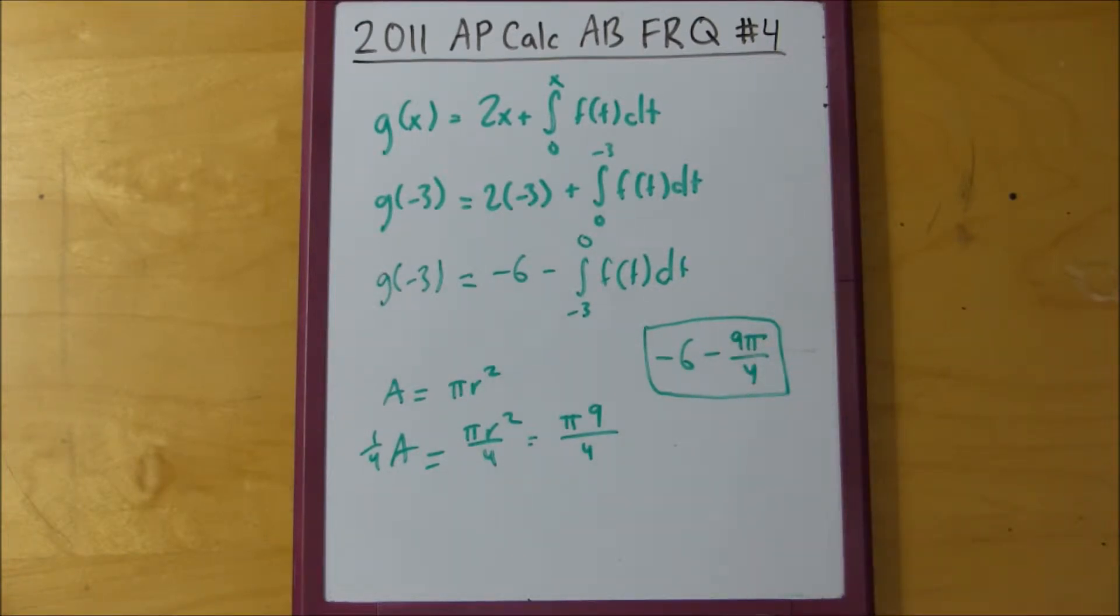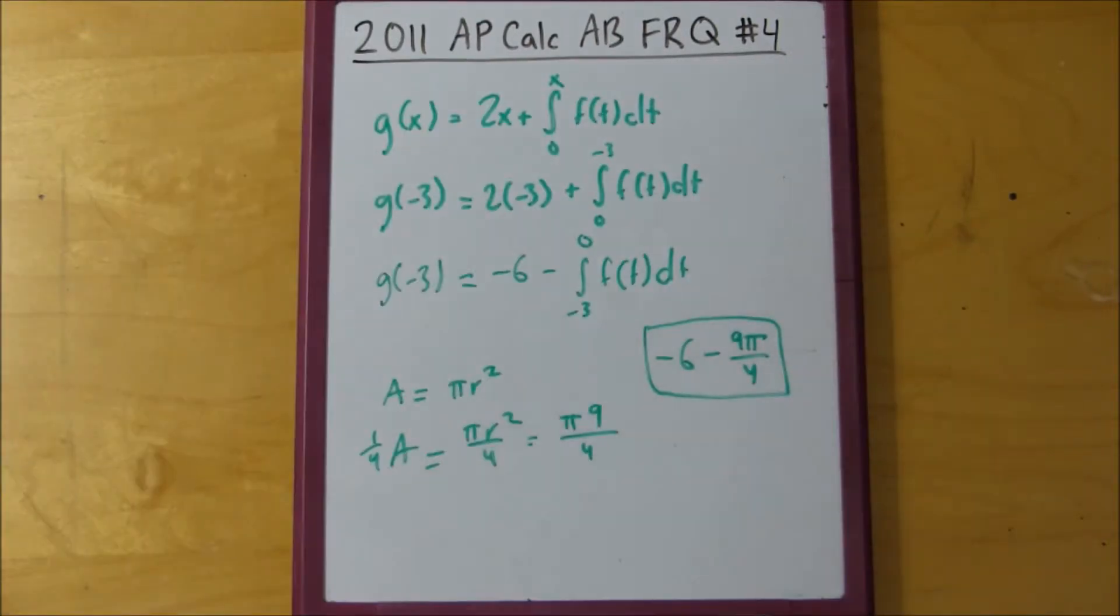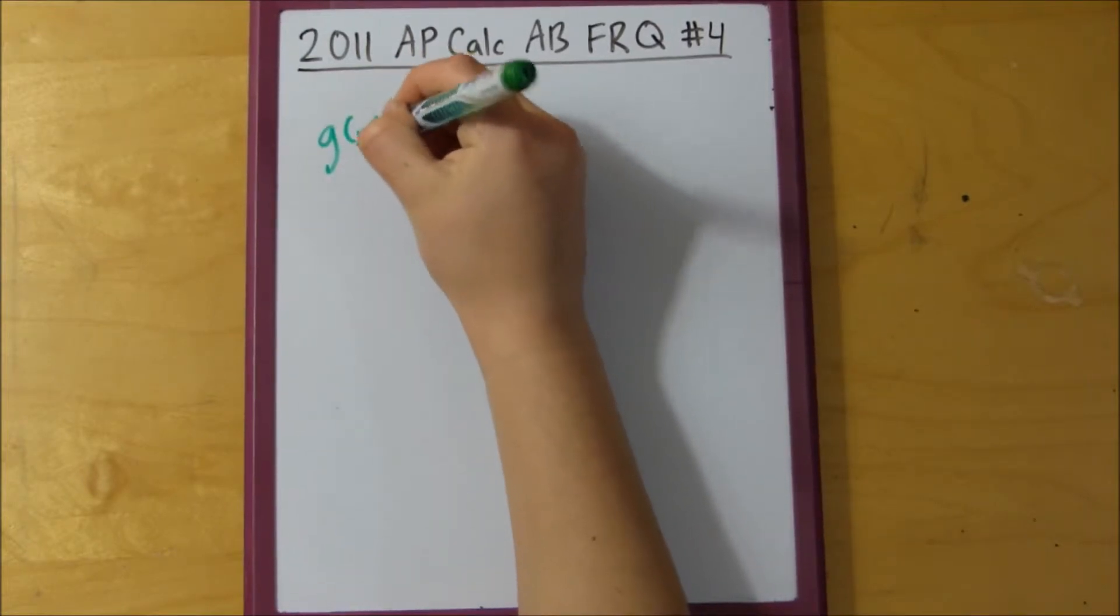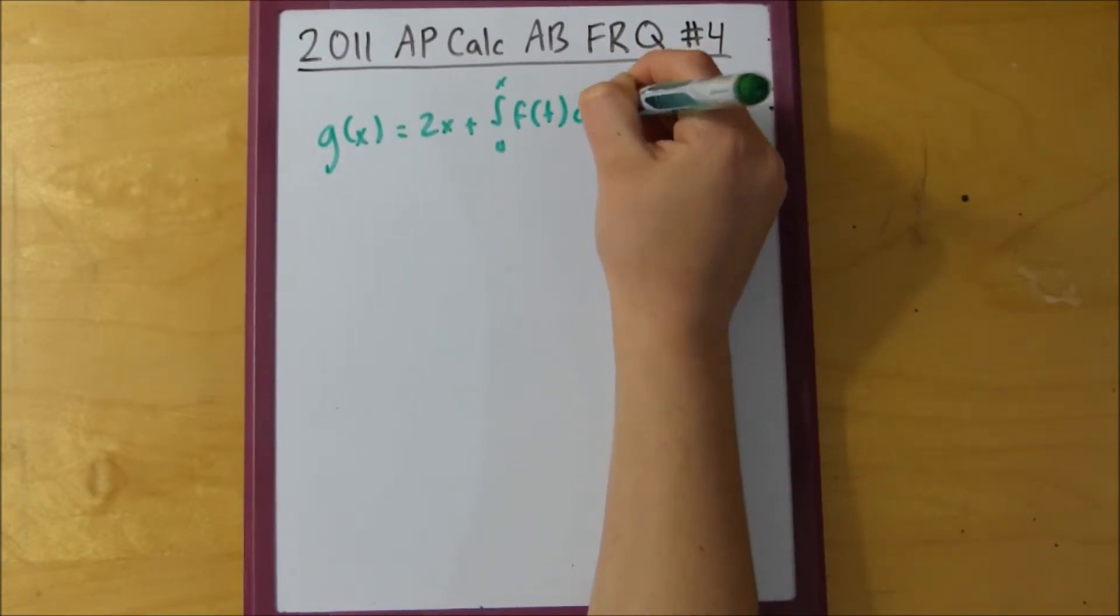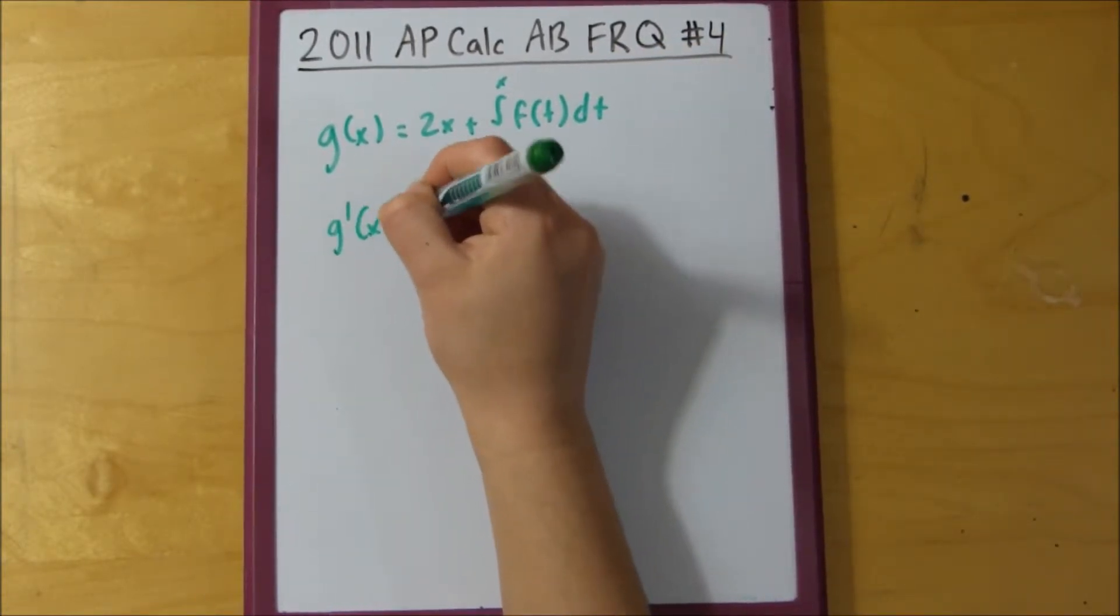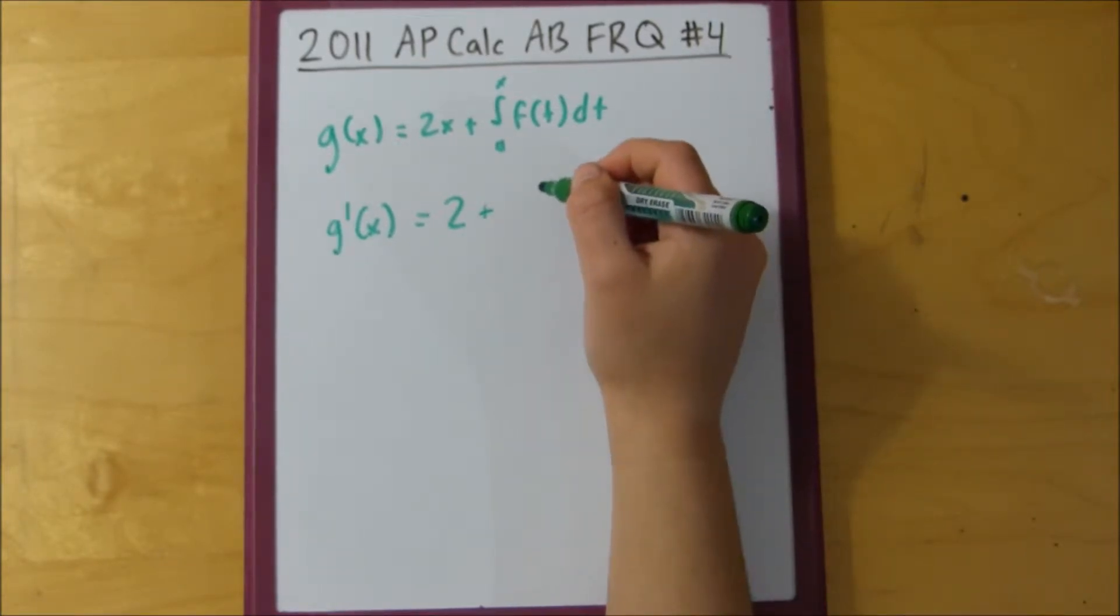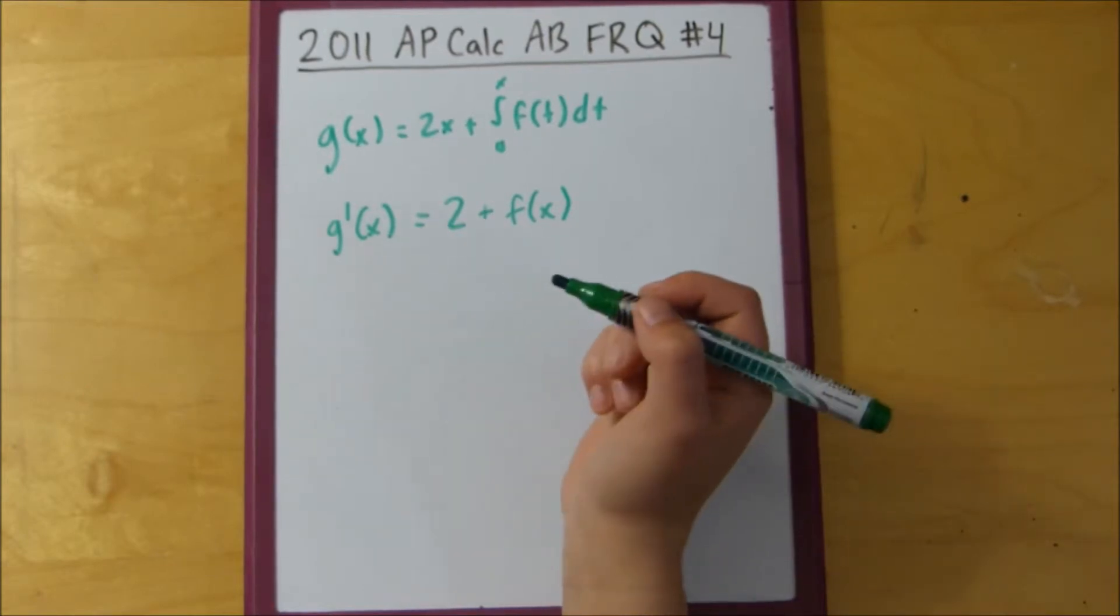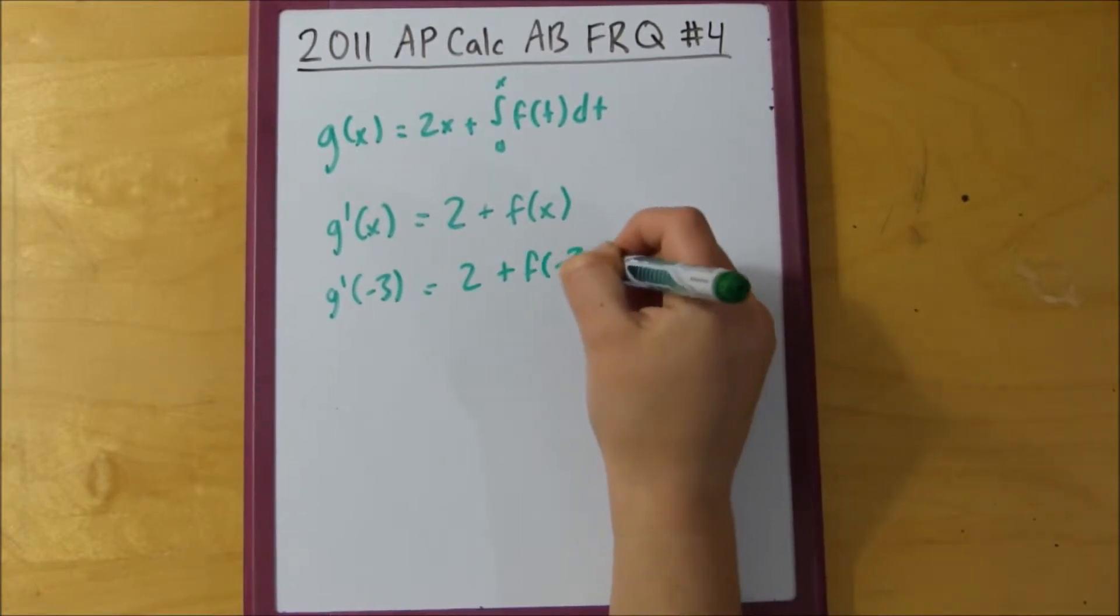So, there are two more parts to this question. It also asks for g prime of x and g prime of negative 3. So, if we know that g of x equals 2x plus 0 to x f of t dt, to find the derivative of this, this is just simple deriving and then we use the Fundamental Theorem of Calculus Part 2. So, this is just going to be f of x. So, then we can plug in negative 3, 2 plus f of negative 3.